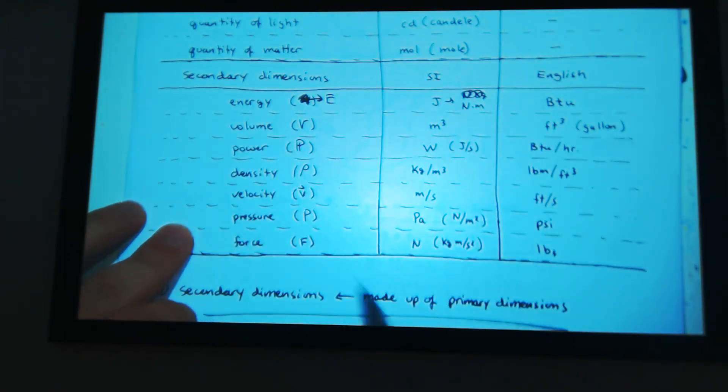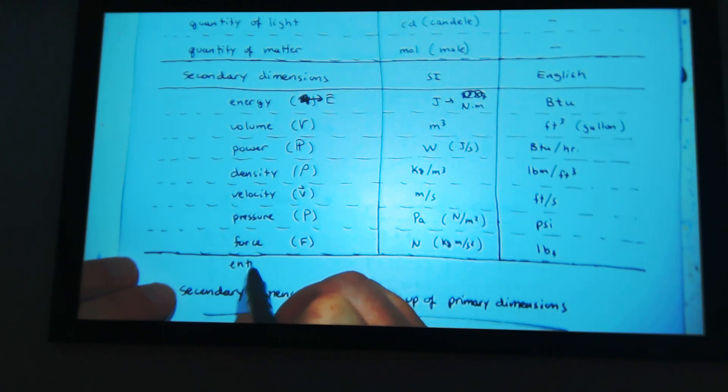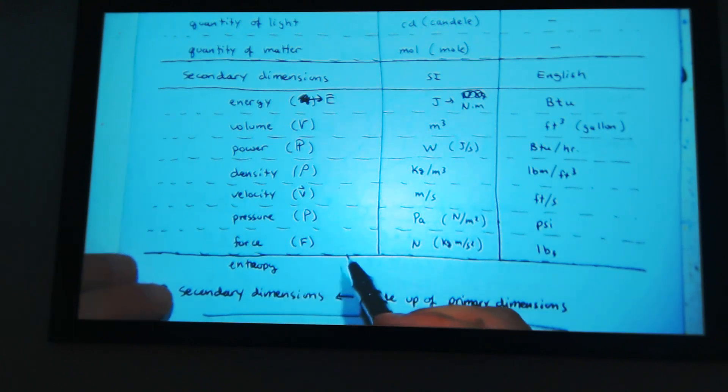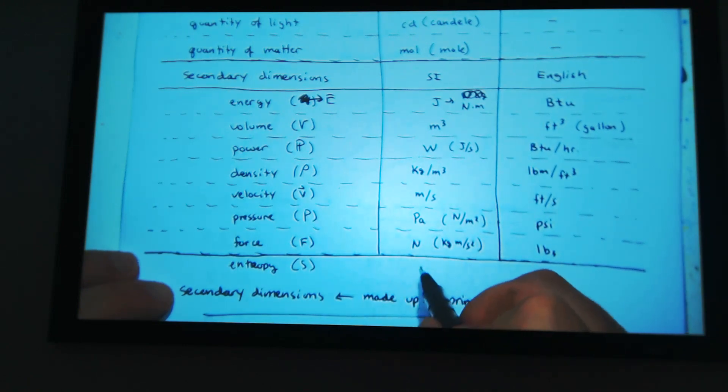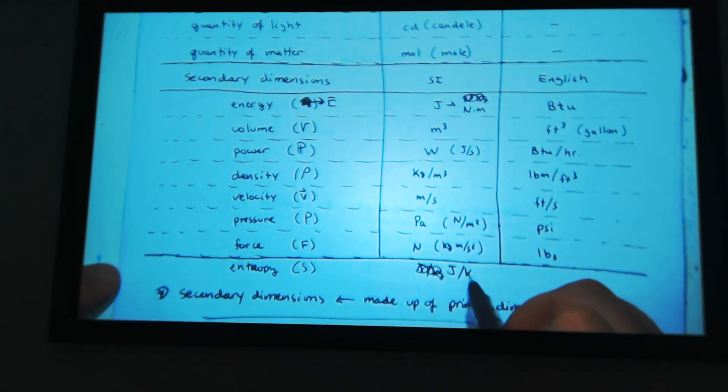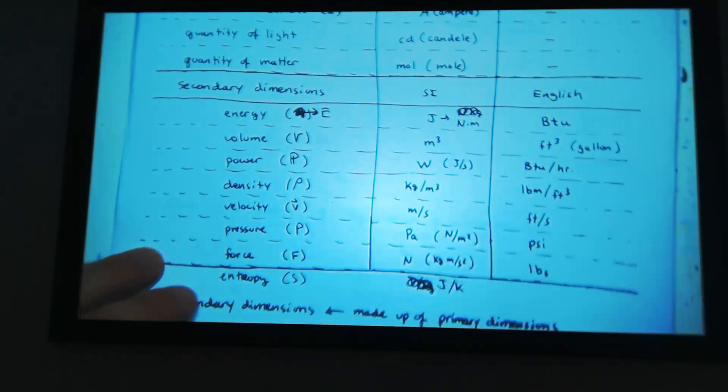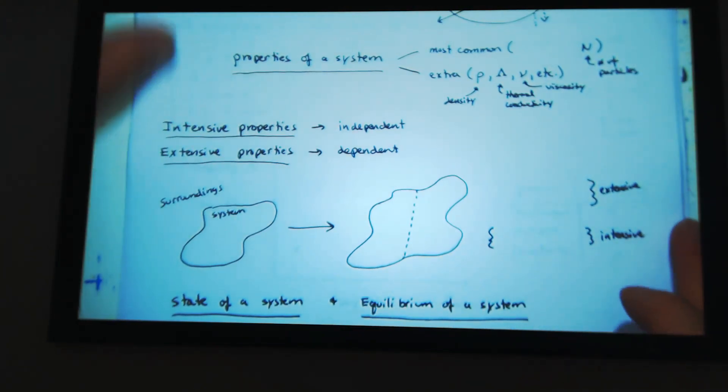And thermodynamics deals with entropy. So I guess I could say a secondary dimension of entropy, giving it a dimension. But I guess I could say properties. Entropy S. And then this is joules per kelvin. It's not really a dimension, but it's a property. But it has units. I guess you could say it's a dimension. I never thought of it like that.